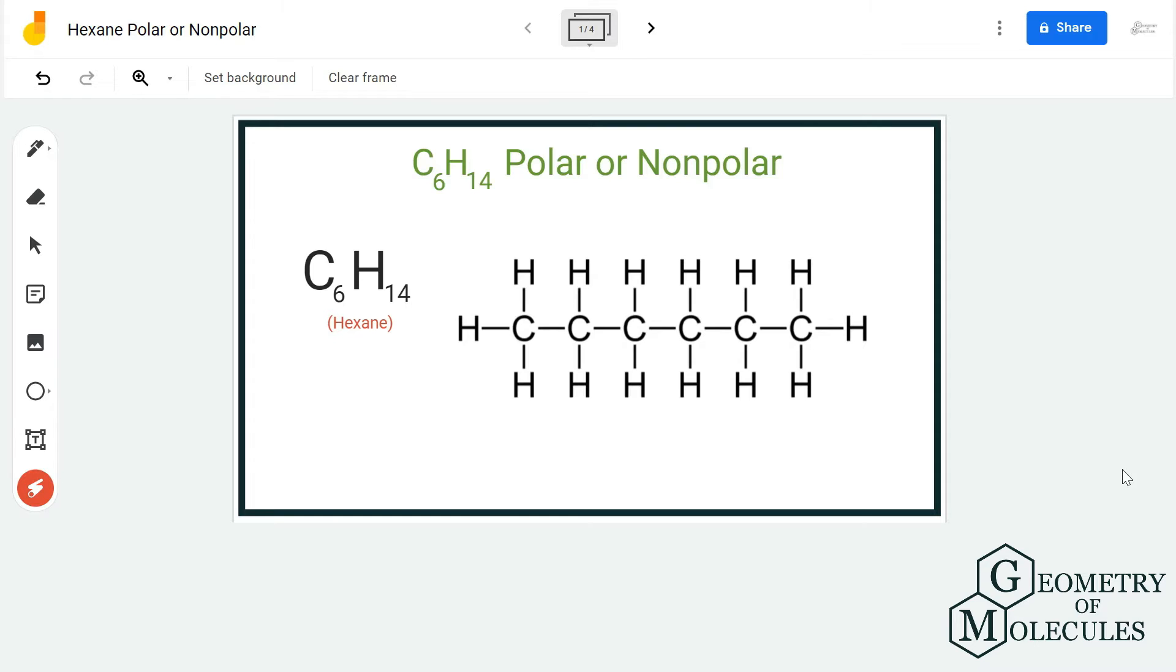So first we are going to look at the Lewis structure for C6H14, which is the chemical formula for hexane. It has a chain of six carbon atoms that forms the backbone of the molecule, forming bonds with 14 hydrogen atoms.